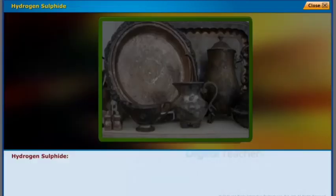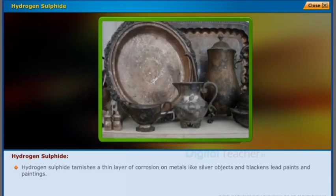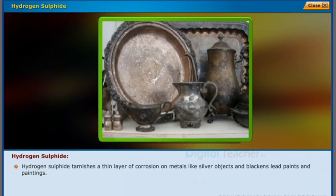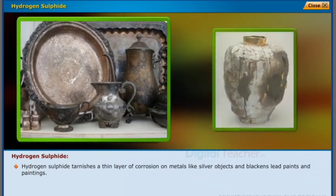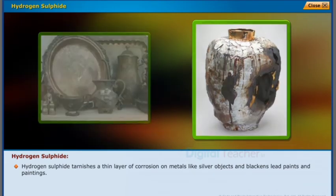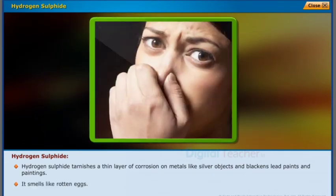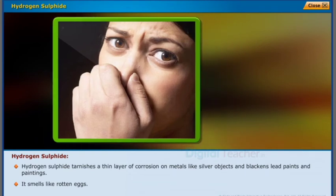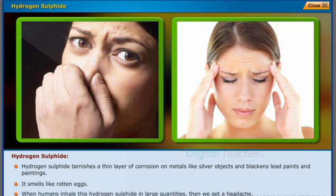Hydrogen sulfide tarnishes a thin layer of corrosion on metals like silver objects, and blackens lead paints and paintings. It smells like rotten eggs. When humans inhale hydrogen sulfide in large quantities, it causes headaches.